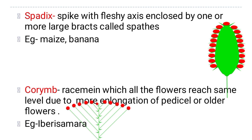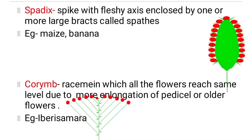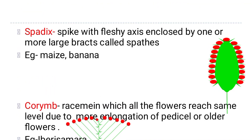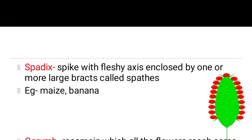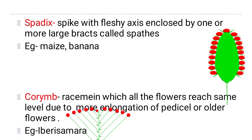Spadix and spathe: the spadix is fleshy and it is enclosed by one or more bracts called the spathe. An example is banana. The peduncle turns out to be fleshy — it gets swollen, and that swollen fleshy structure is the spadix.